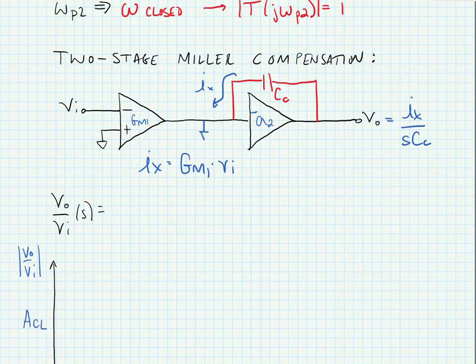This is assuming we place a virtual short at the output of the first stage. Now this model is only valid at high frequency but what we can ultimately find is that v out over vn is equal to gm one over s cc.